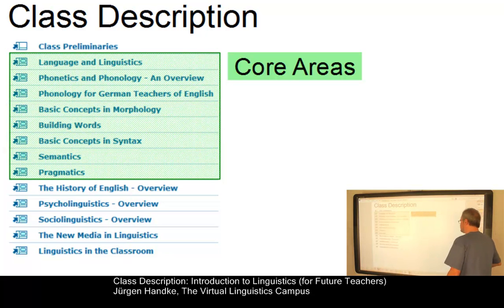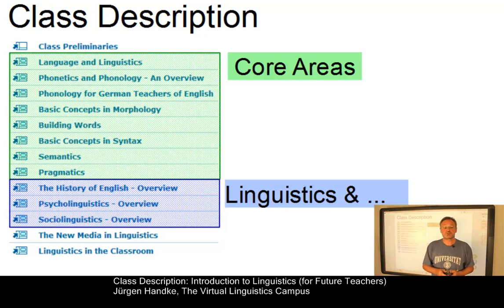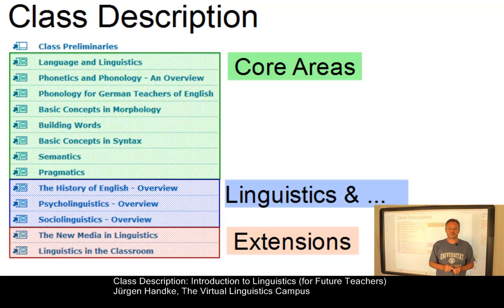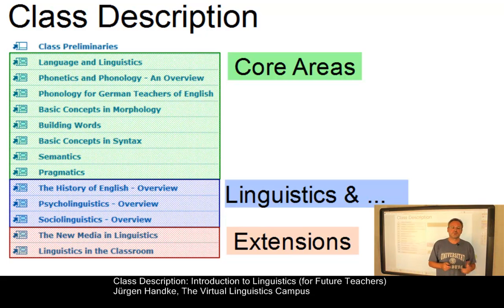The second part of our class deals with what you might want to call the hybrid disciplines, where linguistics combines with other scientific approaches — for example, historical linguistics, psycholinguistics or sociolinguistics. The remaining two sessions look at the new media in linguistics and at the relevance of linguistics in the classroom. The whole class is organized in such a way that the online content serves as a prerequisite for our in-class meetings. In the in-class meetings we will practice using a wealth of exercise material. If you are a remote online student, model solutions and additional online help will be available instead.